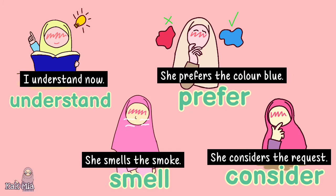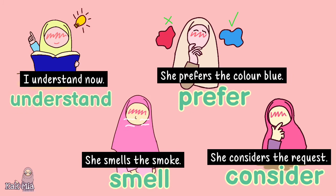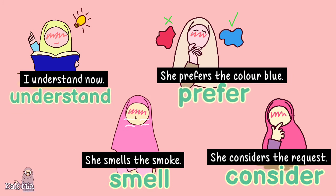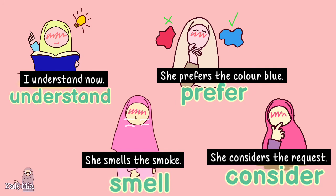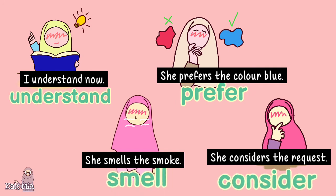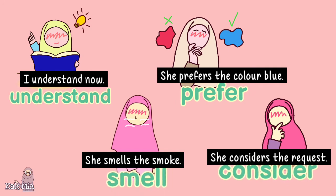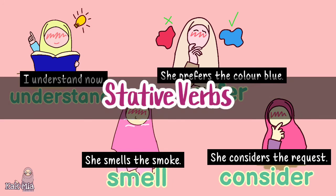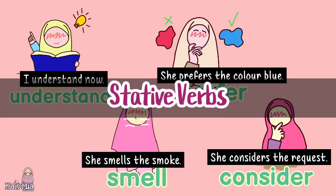Now, let's compare two types of verbs. Understand, reverse, smells, and consider are called stative verbs. Stative verbs refer to states, not actions.